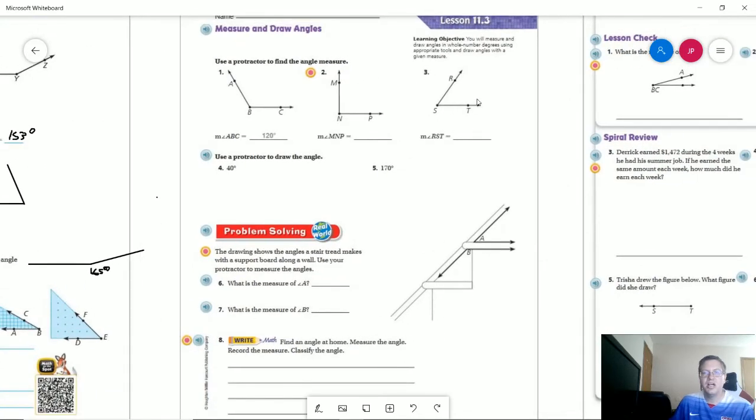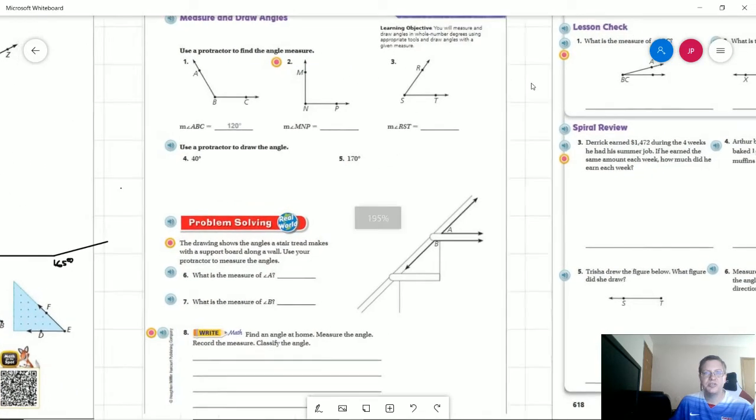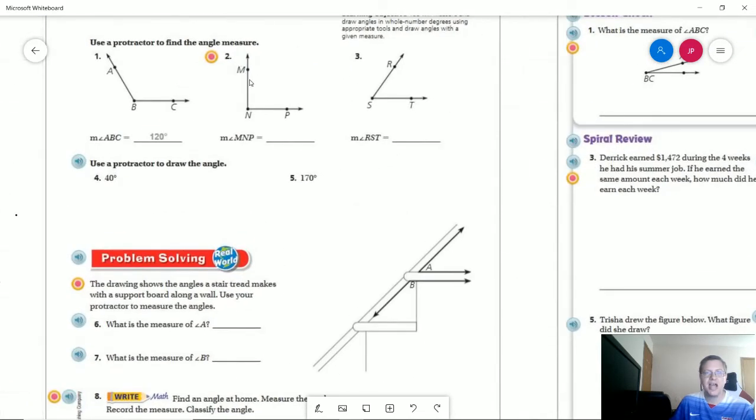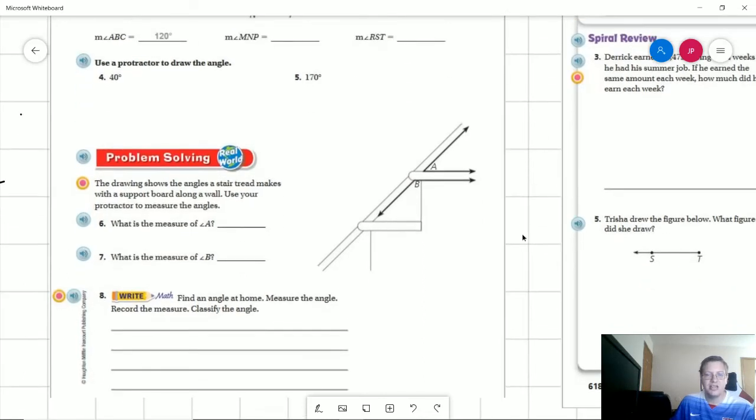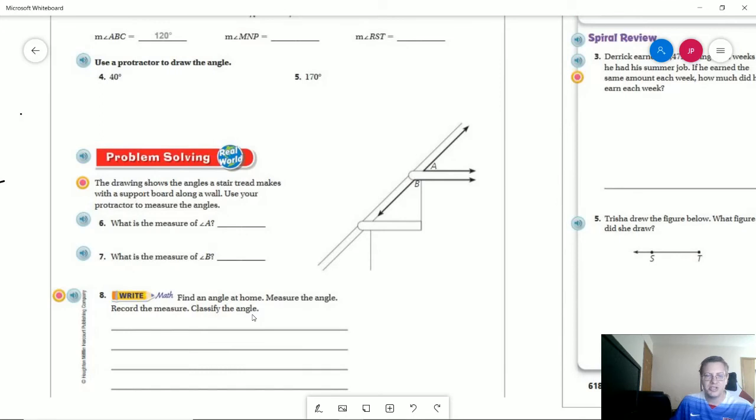So for the homework, they want you to use a protractor. I'm going to give you a guess that this is probably going to be 90 degrees, even though they didn't put this in. For number four, you can again, just draw one. For number six, we're going to have a measurement for this, which is going to be much smaller than 90 degrees. Number eight, find an angle at home and measure the angle.